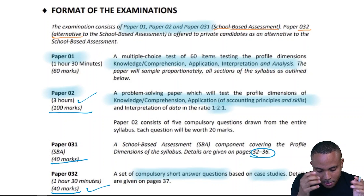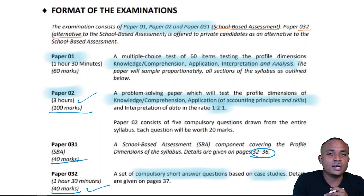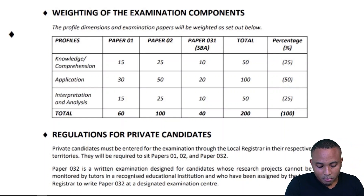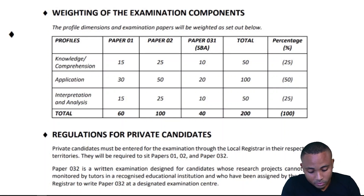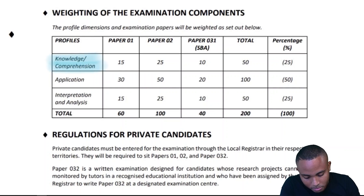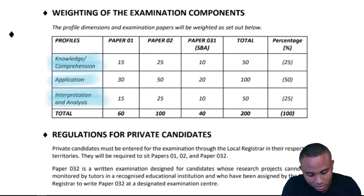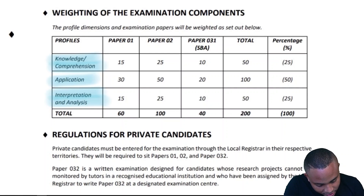Paper 3-2 consists of 10 questions which you are required to answer. Moving on to the weighting of the examination components, the profile dimensions are knowledge and comprehension, application, interpretation, and analysis as assessed across the Principles of Accounting examination.